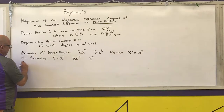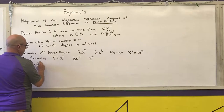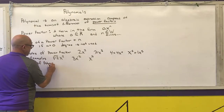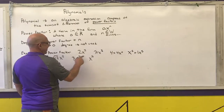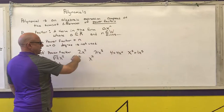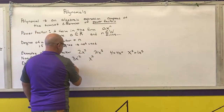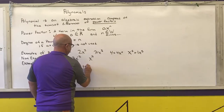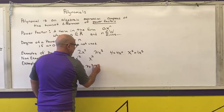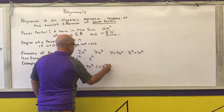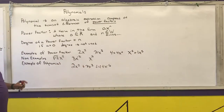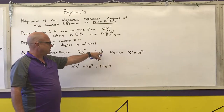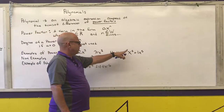An example of a polynomial would be these types of things added together: 2X squared plus pi·X cubed plus 4 plus X to the 5th. That is a polynomial because it is the sum or difference of a bunch of power factors. This power factor has a degree of 2, this one 3, this one 0, and this one 5.